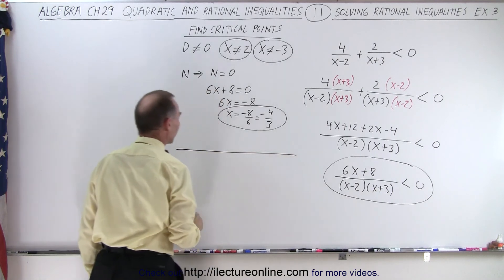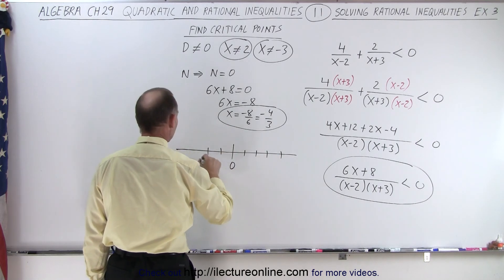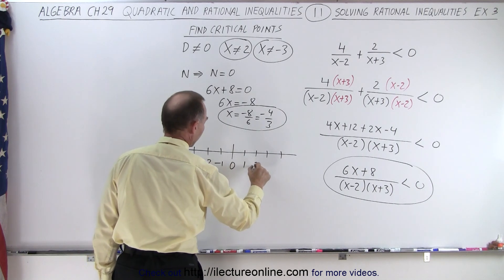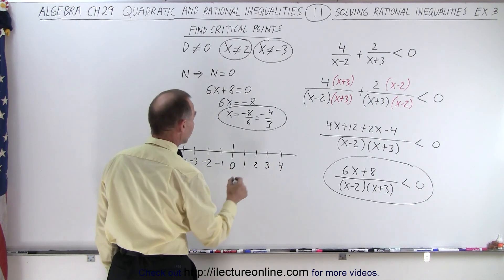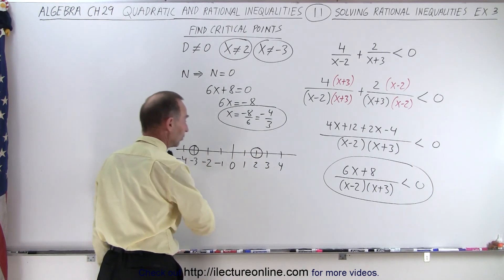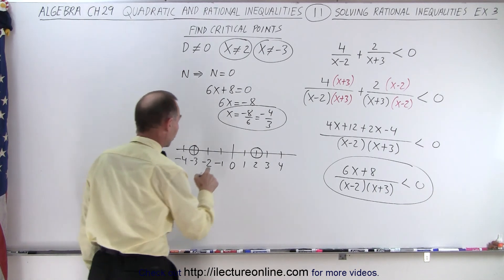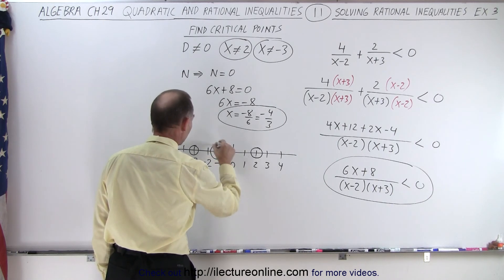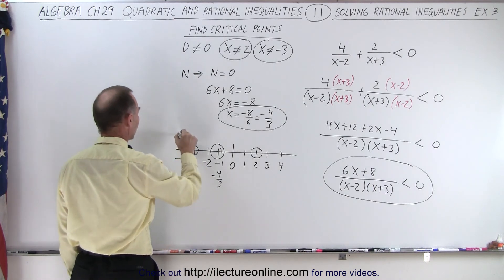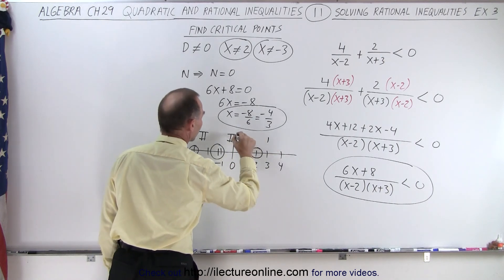Let's find all the critical points on the number line. x cannot equal 2, so we draw an open circle around 2. x cannot equal negative 3, so we draw an open circle there. We don't fill those in because they're not part of the solution — they make the denominator 0. Then we have negative 4 thirds, which falls right about here, and we draw an open circle there as well. This gives us four regions: region 1, region 2, region 3, and region 4.